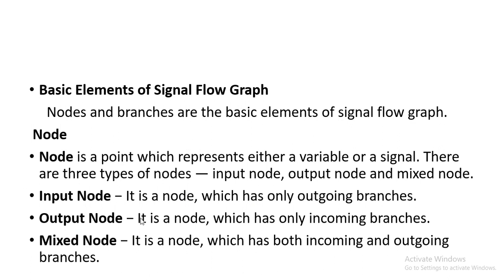An output node is a node which has only incoming branches — it is taking the output, so it will have incoming branches. A mixed node is one which has both incoming and outgoing branches. If a node is performing both input and output functions, it is called a mixed node.